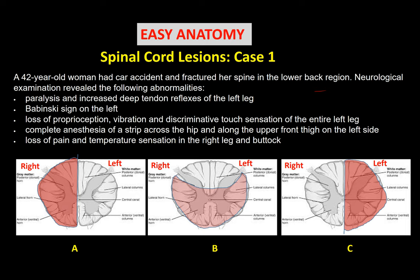In the lateral column, you have the corticospinal tract — the upper motor neuron pathway. The corticospinal tract originates from the right cerebral cortex, descends and crosses in the medulla to the opposite side, then travels down the contralateral spinal cord to supply muscles on the same side. This is why there is upper motor neuron paralysis in the left leg — due to the corticospinal tract in the lateral column.